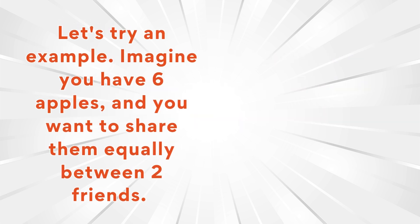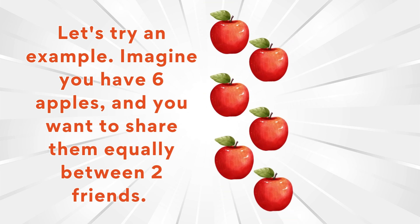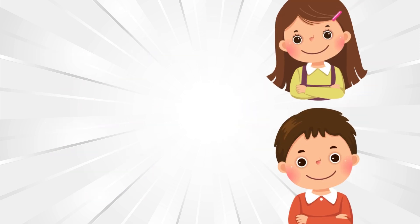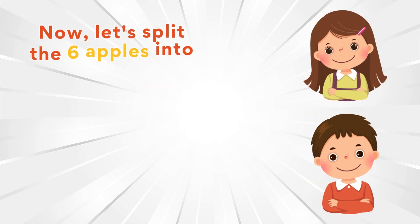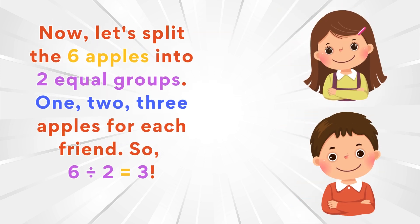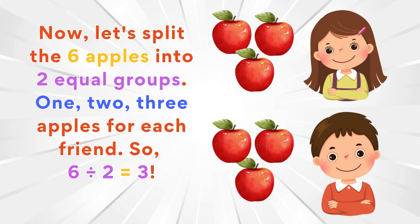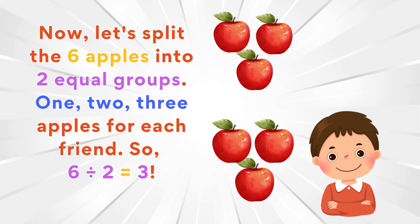Let's try an example. Imagine you have six apples and you want to share them equally between two friends. How many apples does each friend get? We can write this as a division problem: six divided by two. Now let's split the six apples into two equal groups — one, two, three apples for each friend. So six divided by two equals three!